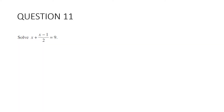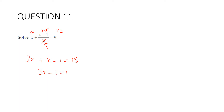Question 11: solve x plus (x minus 1) all over 2 equals 9. This is a simple equation. I like to get rid of the 2 first by multiplying every term by 2. That gives us 2x plus (x minus 1) equals 18. Collecting like terms: 3x minus 1 equals 18. Taking the 1 over: 3x equals 19. Dividing by 3, x equals 19 over 3.